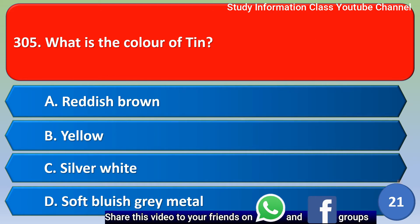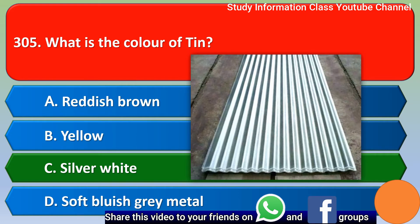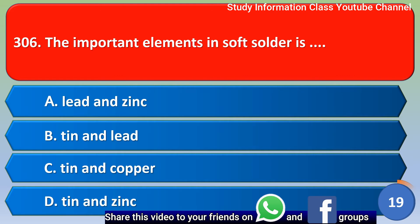Next question: what is the color of tin? Option A: reddish brown, Option B: yellow, Option C: silver white, Option D: soft bluish gray metal. For this question, the right answer is Option C, silver white. Option C is the right answer.